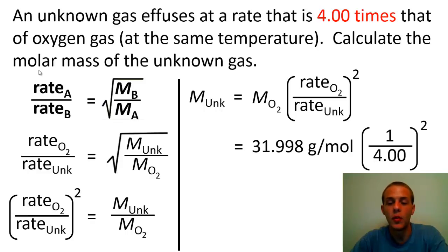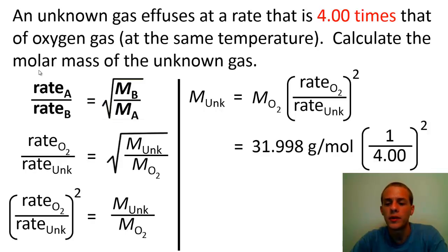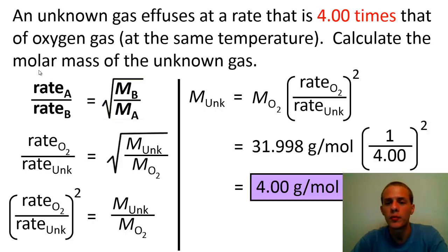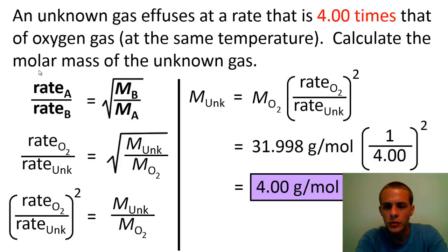Now we plug in numbers. The molar mass of oxygen gas O₂ is the molar mass of one oxygen atom times two, since oxygen is diatomic, giving 31.998 grams per mole. The unknown effuses at 4 times the rate of oxygen, so if we set the rate of oxygen to 1, the rate of the unknown is 4. That gives us (1/4)² times 31.998 grams per mole, which equals 4.00 grams per mole. This unknown gas is most likely helium, since the calculated molar mass is closest to helium's molar mass among all known gases.